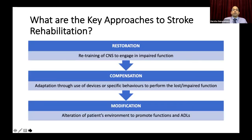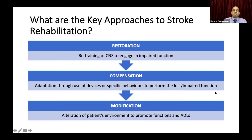What are the key approaches to stroke rehabilitation? Whatever the disability or impairment, we go through three steps. The best is restoration — retraining the CNS to engage in the impacted function affected by the injured brain tissue. Failing that, compensation — using adaptation through devices or specific behaviors to perform the lost or impaired function. Finally, modification — altering the patient's environment to promote function and activities of daily living. These three mechanisms apply depending on severity.